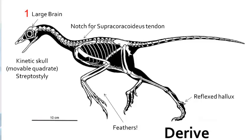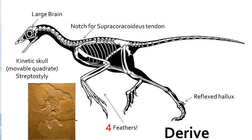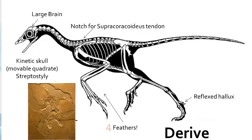Looking at those traits, it appears that Archaeopteryx is a dinosaur. Now let's look at the derived features of Archaeopteryx — we can think of these as the bird traits. First, this creature has a large brain with a larger orbit for the eye, much like we saw in chickens. Two, the skull is very nimble and exhibits streptostyly, with a kinetic skull with a movable quadrate — a similar style of skull is found in many birds. Three, the coracoid bone has a hook-like notch for the supracoracoideus tendon, which means that it could flap its wings. Four, we can't forget those stage-5 feathers that almost look modern. And five, the hallux, or big toe, is reflected backward — the anisodactyl trait found in birds.